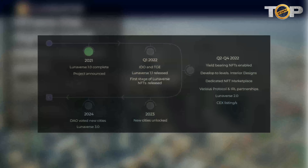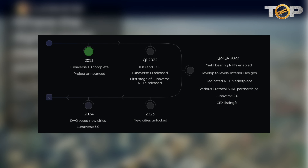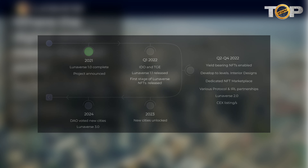Let me show you Luniverse's roadmap. 2021: Luniverse 1.0 complete, project announced. Q1 2022: IDO/TGE, Luniverse 1.1 released, first stage of Luniverse NFTs released. Q2 to Q4 2022: yield-bearing NFTs enabled, development to levels, interior designs, dedicated NFT marketplace, various protocol and IRL partnerships. Luniverse 2.0 and CEX listings in 2023. New cities in 2024 via DAO-voted new cities. Luniverse 3.0 featuring yield-bearing utility NFTs.